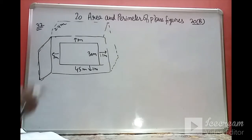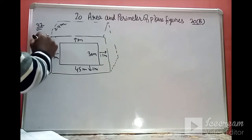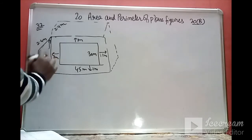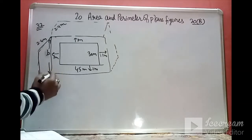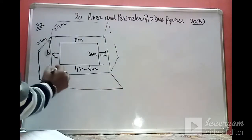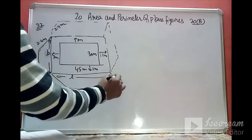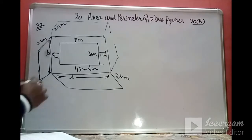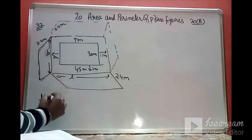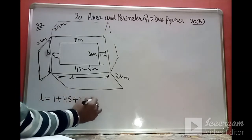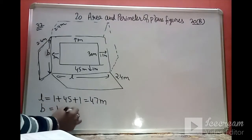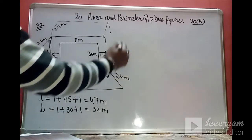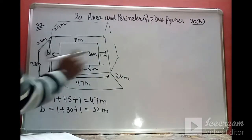The inner surface of each wall is its height times its length. The outer length L is 1 plus 45 plus 1 equals 47 meters. The outer width B is 1 plus 30 plus 1 equals 32 meters. So the outer rectangle is 47 m by 32 m.